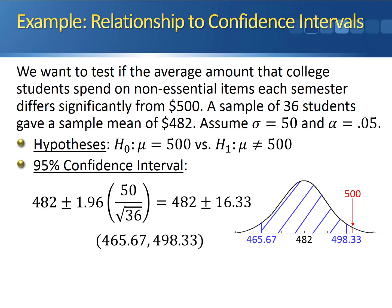500 lies outside of the confidence interval, meaning it lies outside of reasonable values for the population mean. What this means is that 482 is too far away from 500 for 500 to be a reasonable estimate of the average amount that college students spend on non-essential items each semester.